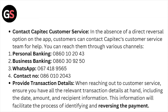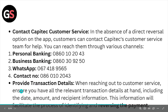You can also contact the Capitec customer service team. In the absence of a direct reversal option on the app, customers can reach the Capitec customer service team for help through various channels, whether personal banking, business banking, WhatsApp, or contact number. When reaching out to customer service, ensure you have all the relevant transaction details at hand, including the date, amount, and recipient information. This information will facilitate the process of identifying and reversing the payment.